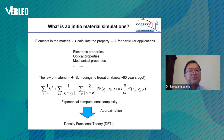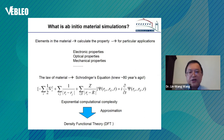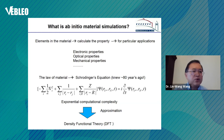What is ab initio calculation? It means we do not use experimental parameters. Basically, you give me the elements — what atoms, what type of atoms in the material and how many — and maybe some rough idea whether it's a crystal or something. Then we can calculate the properties of the material and filter for any particular features or applications, including electronic properties, optical properties, mechanical properties, chemical reactions, and catalysis.